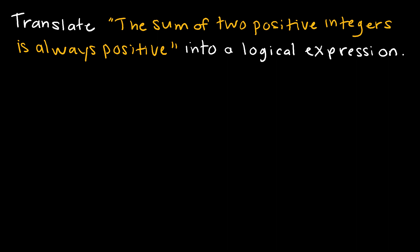For some of you this might just be very easy to do, but if you're struggling with how to even get started, it might be a good idea to rewrite that sentence. Instead of using positive integers, say x and y. Instead of saying always positive, we might say greater than zero. We're basically rewriting the sentence to be just a bit more mathy so that it's easier for us to translate into a logical expression.